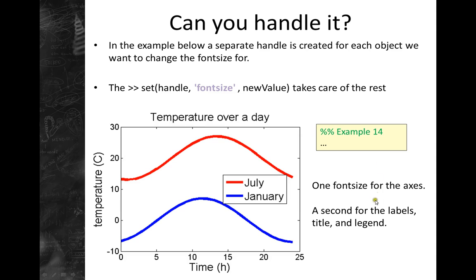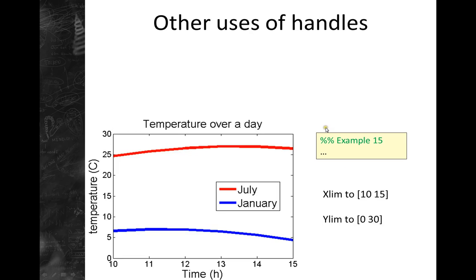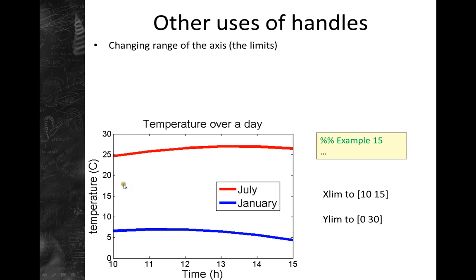You can check out example 14 for this. You can also use handles to change the range of data that is plotted — that is, the limits. For example, setting xlim to between 10 and 15 on the x-axis, and ylim to between 0 and 30. This lets you zoom in on a specific area. There's also an easier direct way to control limits, and that's written as a comment in example 15.